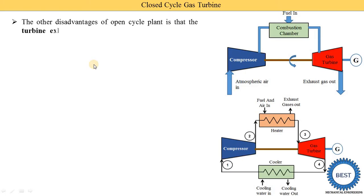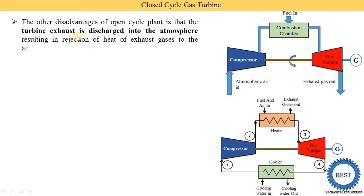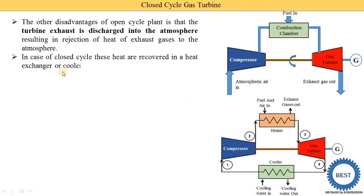Another disadvantage of the open cycle plant is that the turbine exhaust is discharged to the atmosphere, resulting in the rejection of heat from exhaust gases to the atmosphere. In the open cycle diagram, exhaust gases are directly supplied to the atmosphere, so there is a loss of heat energy. In the case of closed cycle, this heat is recovered in a heat exchanger or cooler.